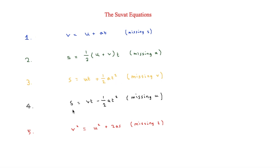Then S equals VT minus half AT squared — displacement equals final velocity times time minus half times acceleration times time squared, very similar to the third one. And finally, V squared equals U squared plus 2AS: final velocity squared equals initial velocity squared plus 2 times acceleration times displacement.